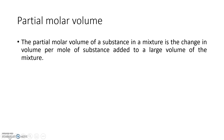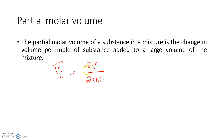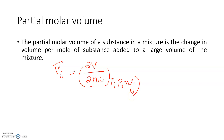Partial molar volume V̄_i is defined as ∂V/∂N_i. It is the change in volume per mole of a substance — the change in volume by the addition of one mole of component i, at constant temperature and pressure and other components. This is known as partial molar volume.